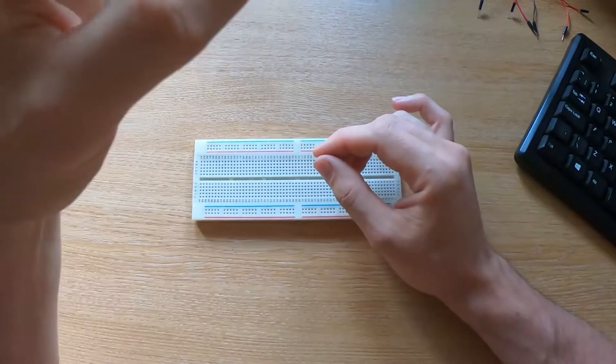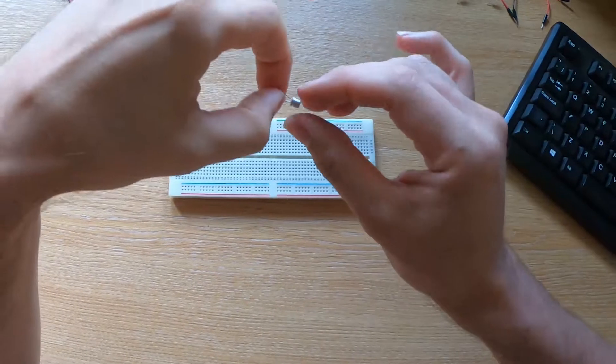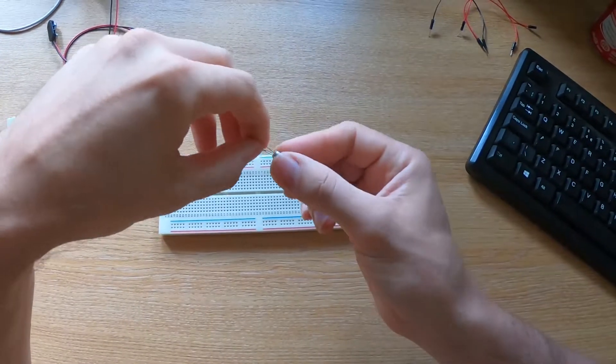So here we have a BC108 transistor. It's got three legs on it, the base, the collector, and the emitter, as I described in the previous video.